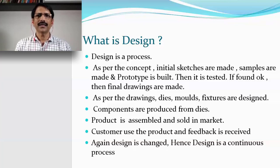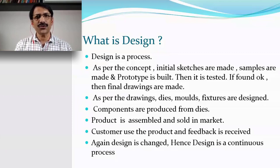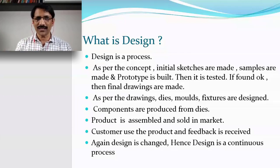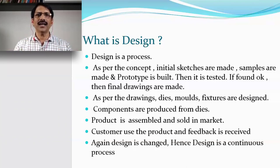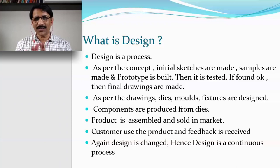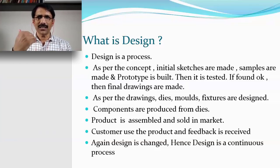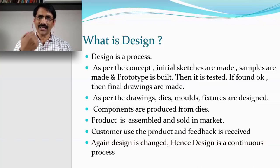Once all inputs are there, we start the conceptual design. Initially a concept is built, then we discuss with people from all other departments — maybe marketing, service, production, QA — that is the cross-functional team. When your design is at a preliminary stage, you consult all these people, they give you feedback, and then you modify the design again. After that you build a prototype. If the prototype is okay, we finalize the design and start generating the final drawing. Once the drawing is released for production, we design dies, molds, fixtures, and gauges. Then we produce components from the dies and molds, assemble the product on the assembly line, and sell it in the market. The customer uses it, gives feedback, and then we redesign again.